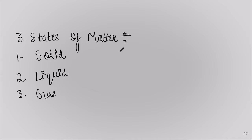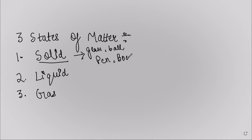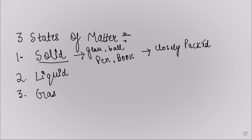Let's first talk about solid. Examples include a glass, a ball, a pen, a book, and many others. Solids are very, very closely packed — this is the major property of a solid. The particles do have spaces, but compared to liquids and gases, they are very closely packed.